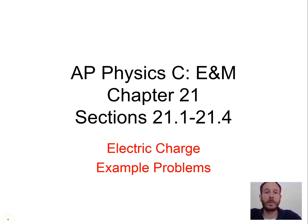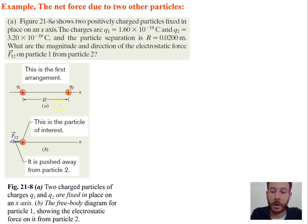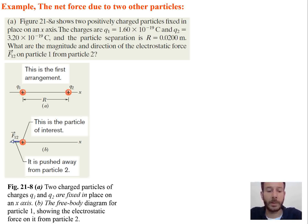In this video we're going to cover some example problems for electric charge. The first example shows two positively charged particles fixed in place on the x-axis — Q1 and Q2 — separated by a distance r of 0.0200 meters. Q1 is 1.6 times 10 to the negative 19 coulombs and Q2 is 3.20 times 10 to the negative 19 coulombs. We need to find the magnitude and direction of the electrostatic force F12 on particle 1 from particle 2.